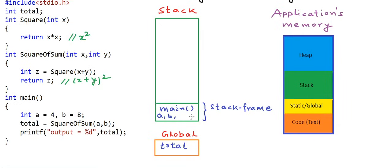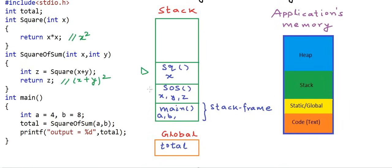The size of the stack frame for a method is calculated when the program is compiling. Now when main calls square of sum (shortcut SOS), a stack frame is allocated for the call to square of sum. All the local variables x, y, z will sit in this particular stack frame. Now square of sum calls square, so another stack frame for square with its own local variables. At any time during the execution of the program, the function at the top of the stack is executing and the rest are paused, waiting for the function above to return something and then resume execution.